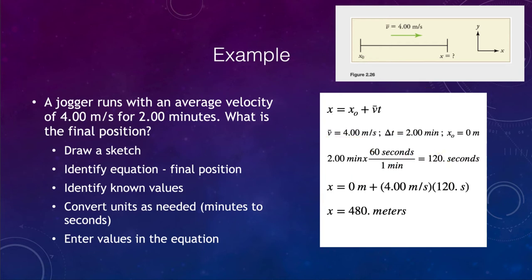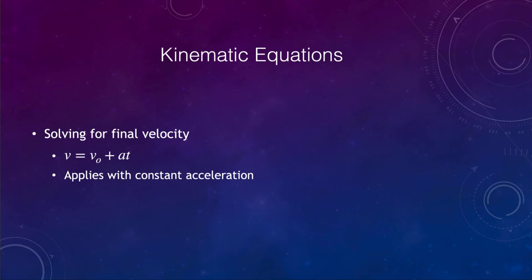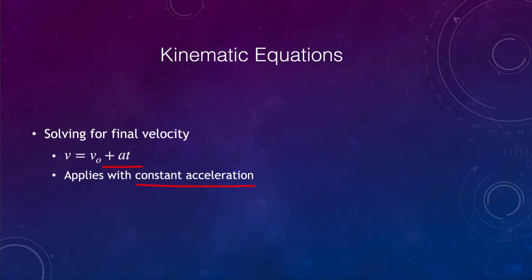Let's look at our third kinematic equation, which solves for the final velocity: final velocity equals initial velocity plus acceleration times time. Again, we're assuming constant acceleration. If acceleration is not constant, we can either break the problem into steps where each section has roughly constant acceleration, or we need to use calculus to solve the problem. Let's work an example with this equation.